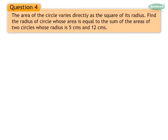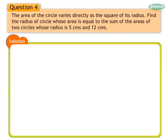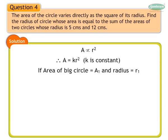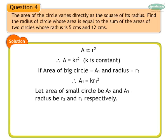Let us solve the following word problem on variation. Question 4: The area of the circle varies directly as the square of its radius. Find the radius of a circle whose area is equal to the sum of the areas of two circles whose radii are 5 cm and 12 cm. We write symbolically that area varies directly as the square of its radius. Therefore, a is equal to kr square, where k is constant. If area of big circle is a1 and radius is r1, then a1 is equal to kr1 square. Let area of the two smaller circles be a2 and a3, and their radii be r2 and r3 respectively. Then a2 is equal to kr2 square and a3 is equal to kr3 square.